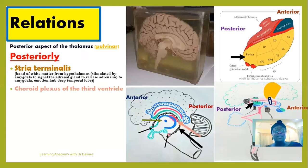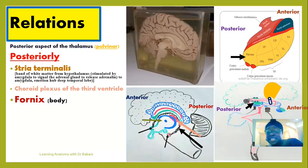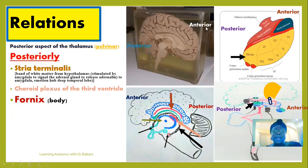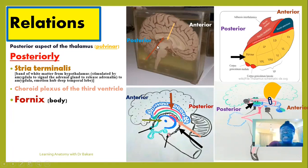The second posterior structure is the choroid plexus, specifically the choroid plexus of the third ventricle. We also have the fornix — a C-shaped band that is an outflow of the hippocampus. Specifically, it is the body region of the fornix that is positioned at the posterior part of the thalamus. The body of the fornix is thus posteriorly related to the thalamus.